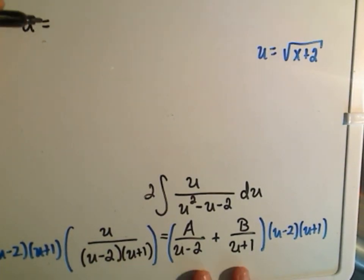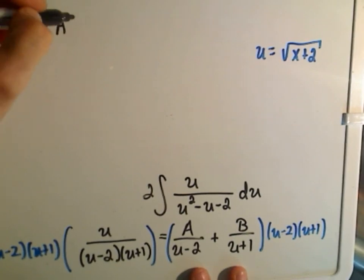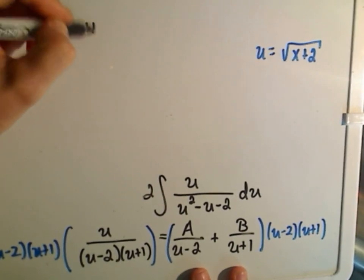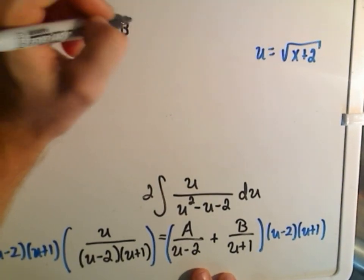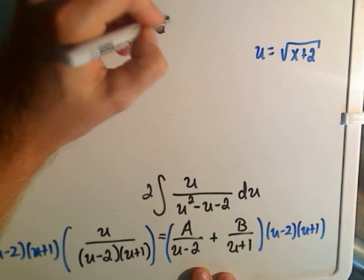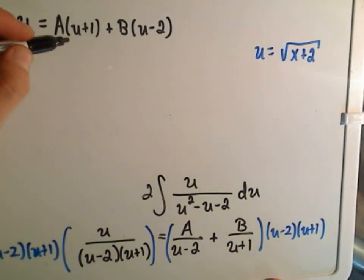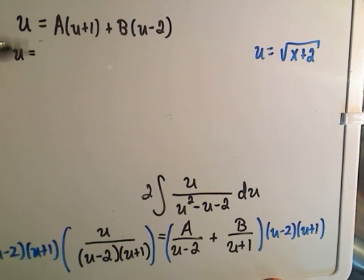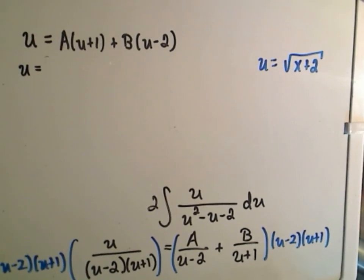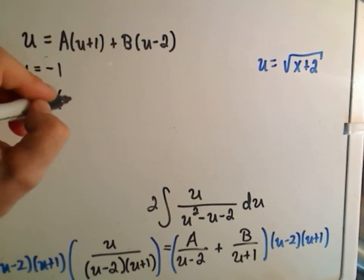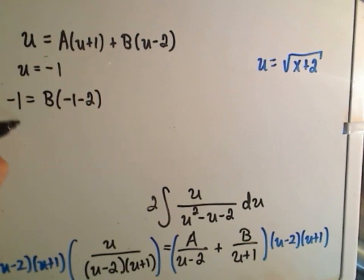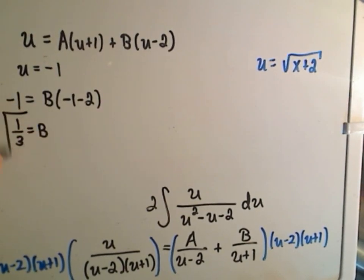So on the left side you're going to get u. On the right side, when you distribute, you'll get A times u plus 1, because the u minus 2s will cancel, and then plus B times u minus 2. Now what we're going to do is figure out A and B, and what you can do is pick clever values that will either cancel out your A term or your B term. So notice if I plug in u equals negative 1, on the left side I get negative 1. On the right side I'll get A times 0, which will cancel out. I'll get B times negative 1 minus 2, that's negative 3. If you divide, we'll get B equals 1 third.